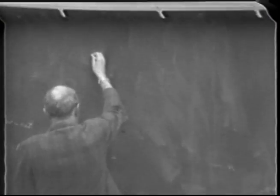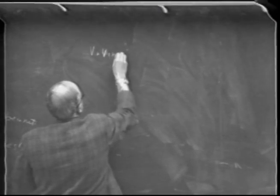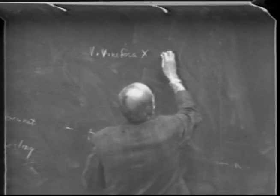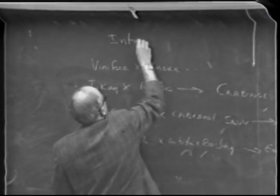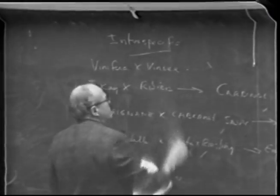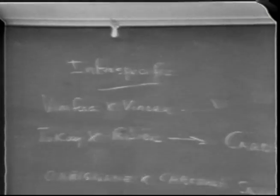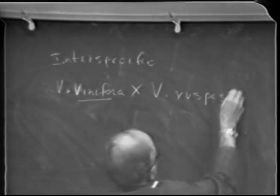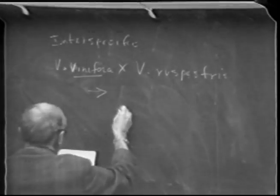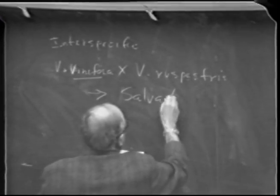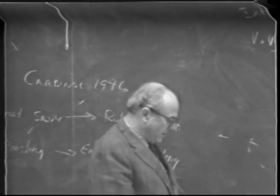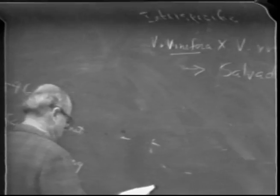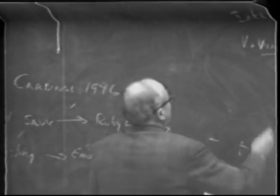Those are two good examples of vinifera crossed with vinifera — an intraspecific cross. An interspecific cross would be vinifera with another species such as Rupestris. The most common one in California, taking up some 10,000 acres, is Salvador — a little black variety with a typical Rupestris-type leaf, small clusters, and jet-black berries when broken.